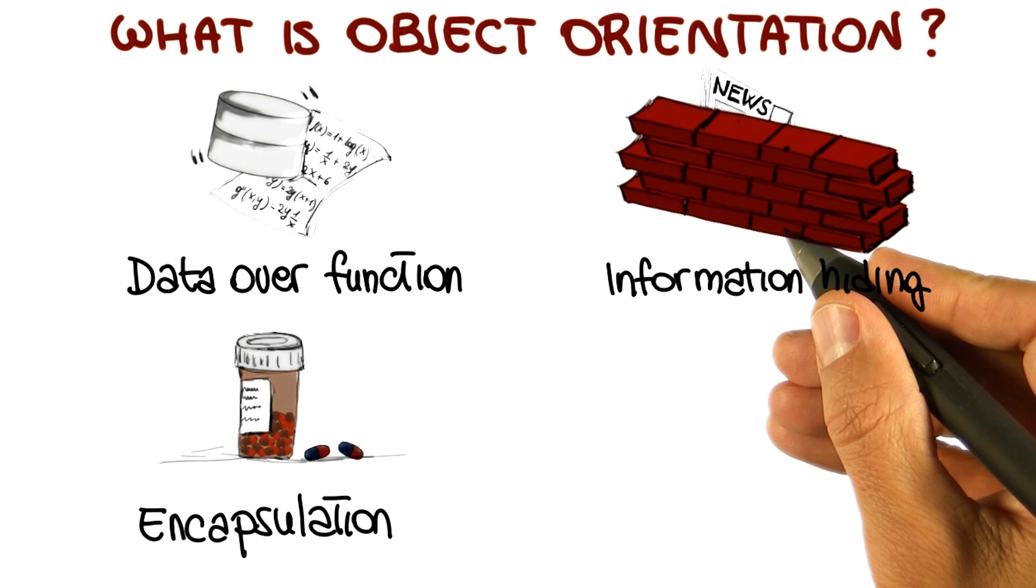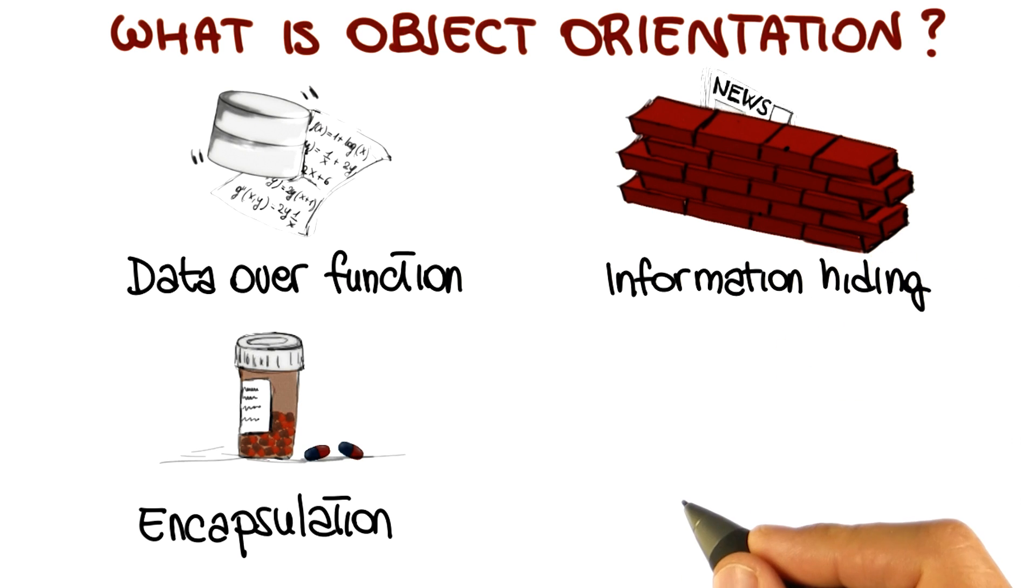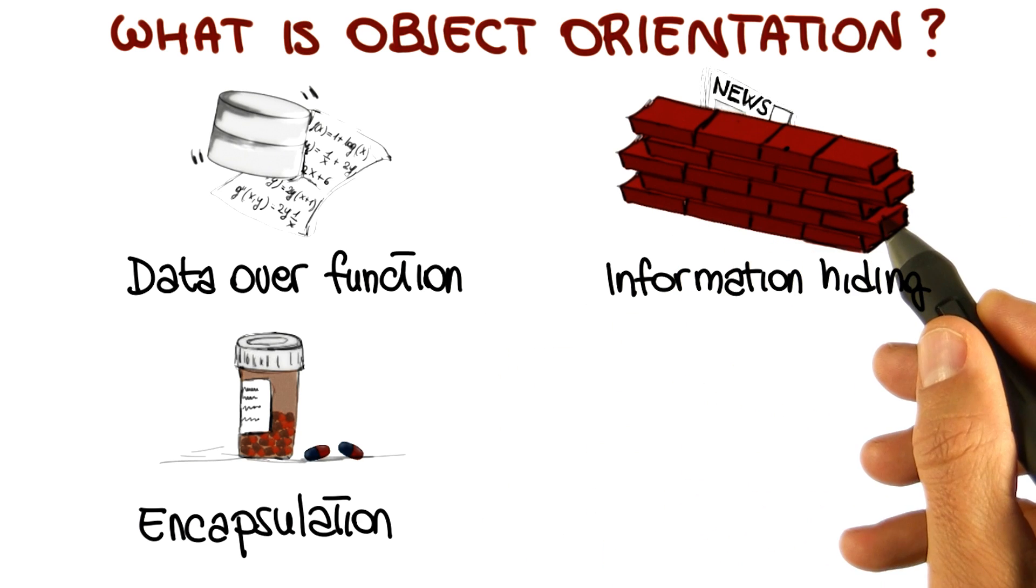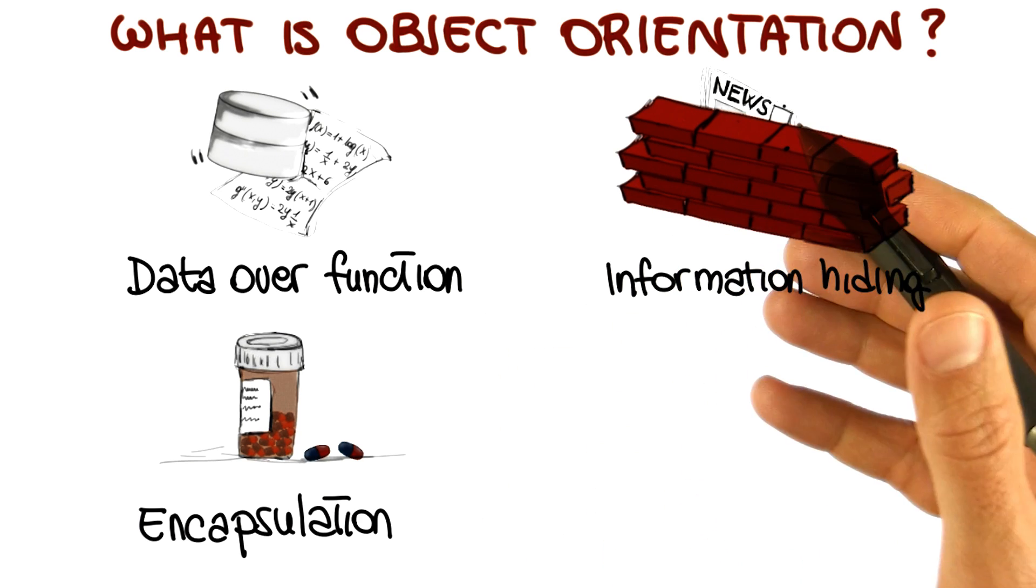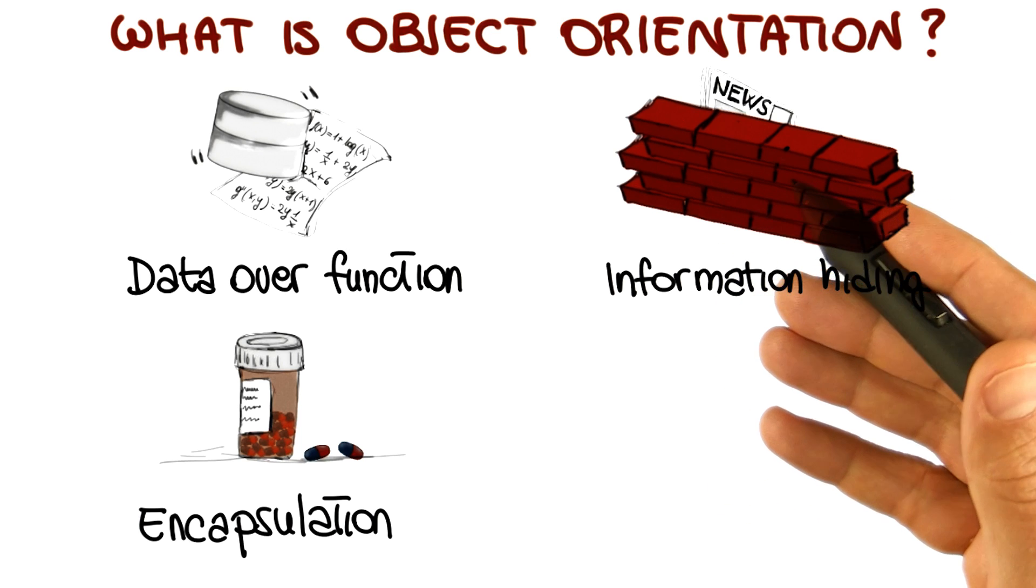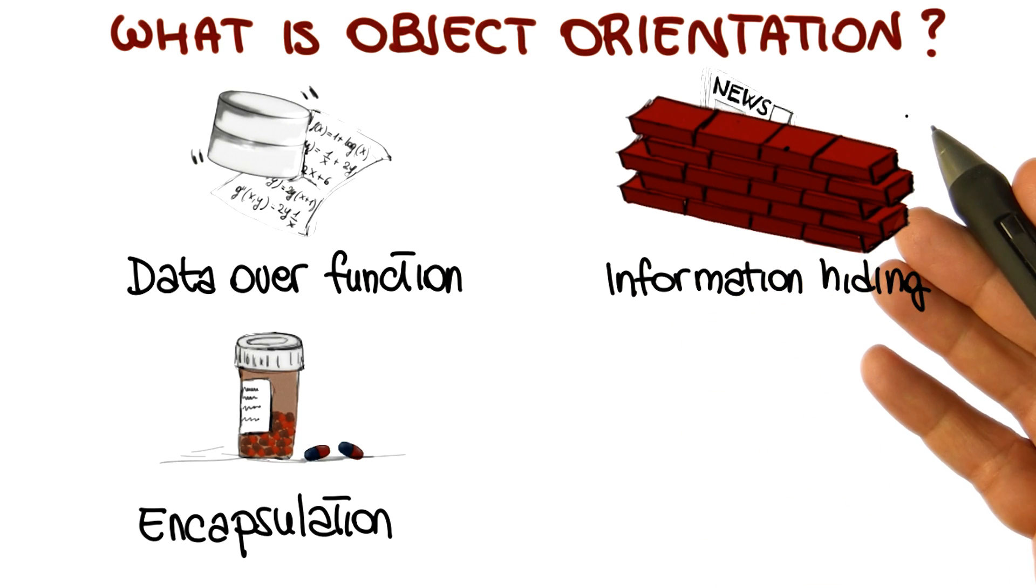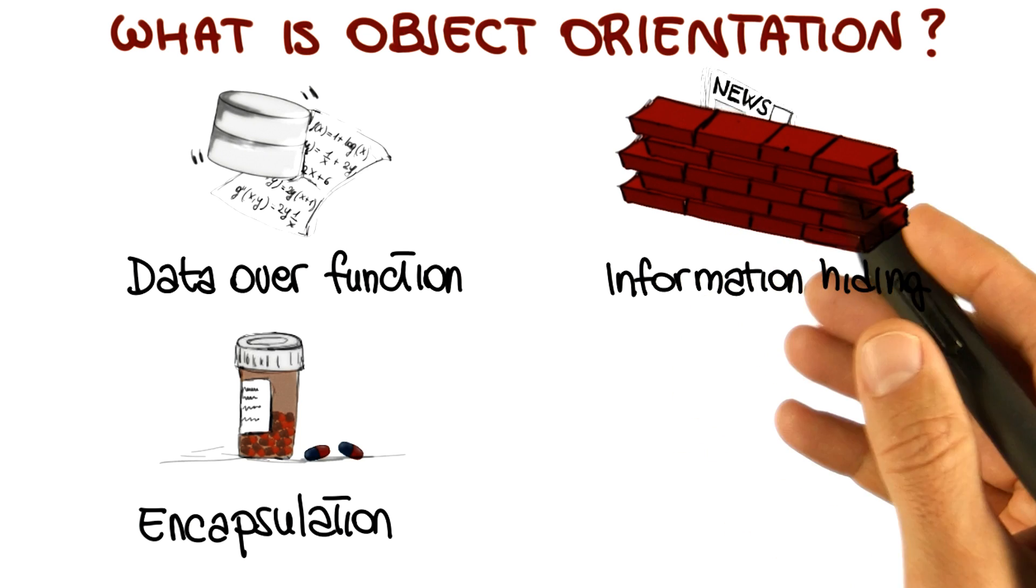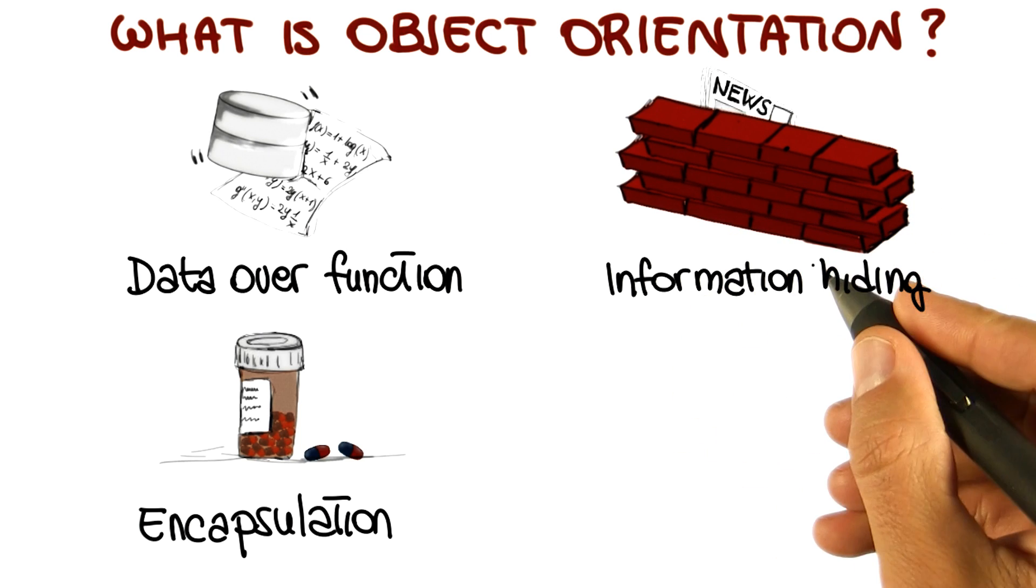And why is that important? Well, for many reasons. And one of the main ones is that it makes code more maintainable. Because the rest of the code, the rest of the system doesn't have to be concerned with how the implementation details or the design are defined. And therefore, any change that happens behind this wall doesn't concern the rest of the system and doesn't affect the rest of the system as long as you keep your interfaces consistent.